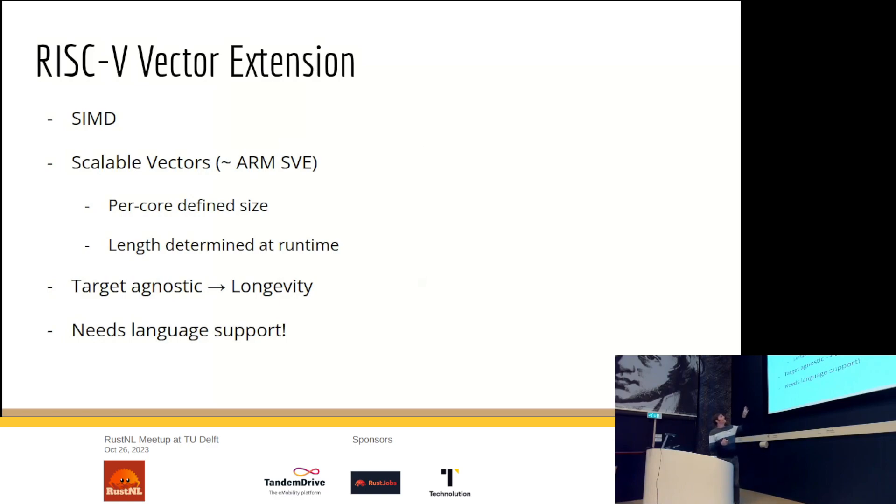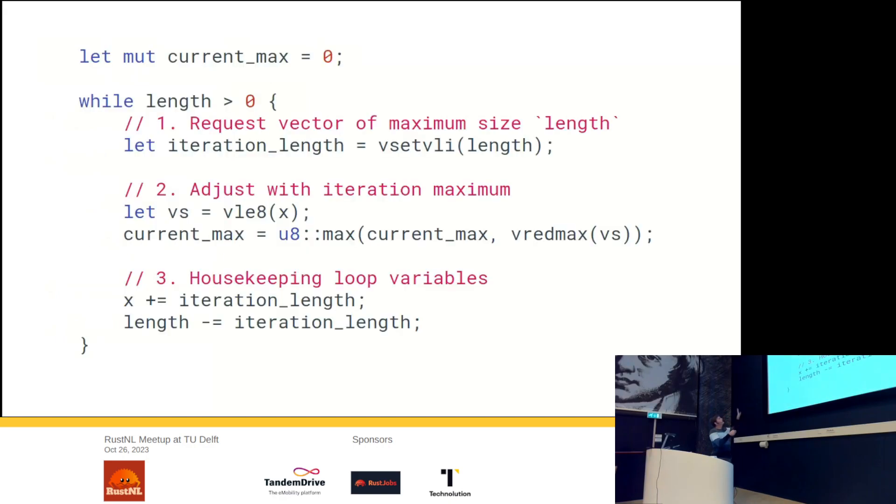So let's look very quickly at how this looks when you use these scalable vectors. This is the general shape you will have. Usually we'll have an outer loop. In this case, we're just calculating the maximum bytes out of the whole array. So we have this array X, and it has the length here. The first thing we always do in our loop is we request from the processor to operate on that amount of bytes, and then it will give you back, okay, actually, I can only operate on this many bytes. And then we load that amount of bytes, and we reduce and find the maximum within that amount of bytes. And we just keep looping until we are through all our bytes.